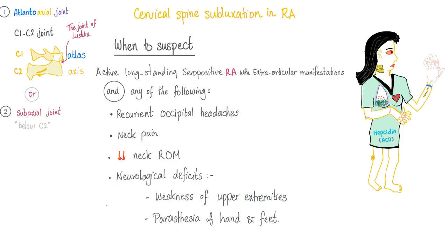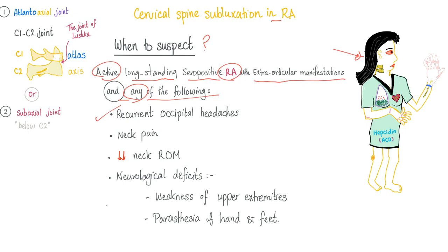When should you suspect cervical spine subluxation in rheumatoid? If there is active, long-standing, seropositive rheumatoid arthritis with extra-articular manifestations and any one of the following: recurrent occipital headache — this is not tension headache, this could be an emergency; neck pain; or decreased neck range of motion, because the skull is mounted on top of this inflamed joint and you won't be able to move it left or right.